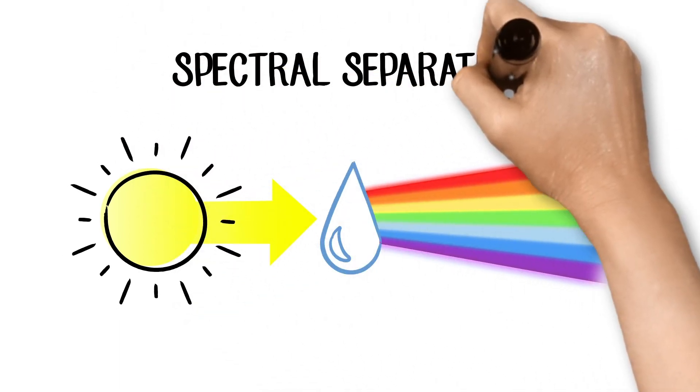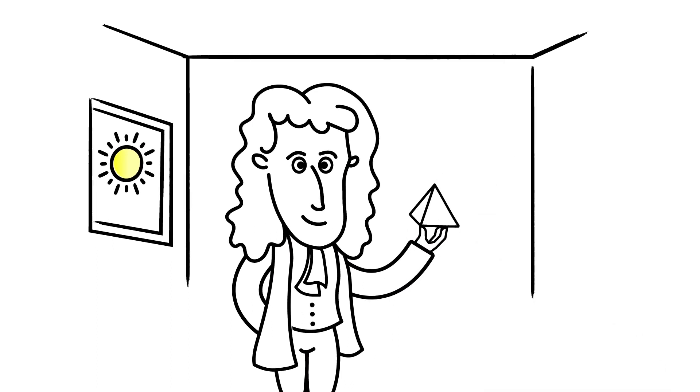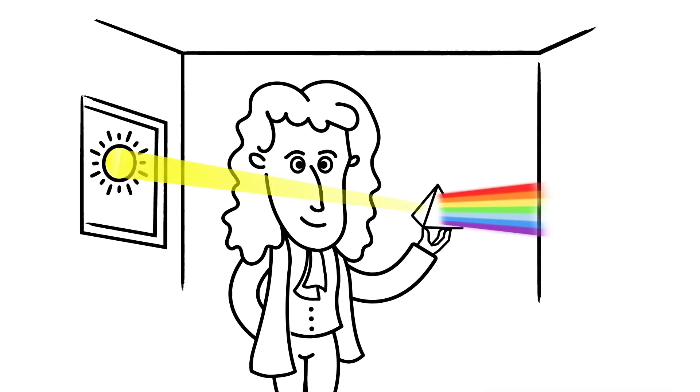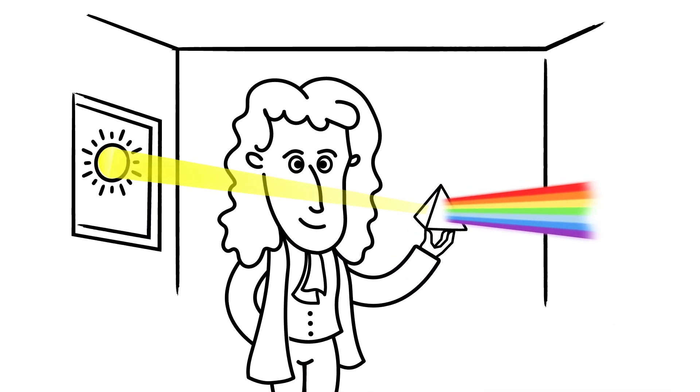In science, this is called spectral separation. Holding a glass prism in his hand, Sir Isaac Newton first defined this phenomenon by projecting the brilliant colors of the spectrum onto his wall.